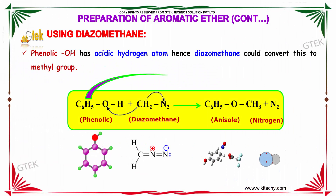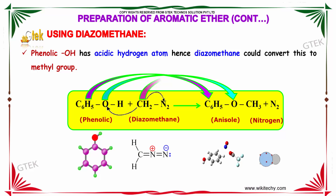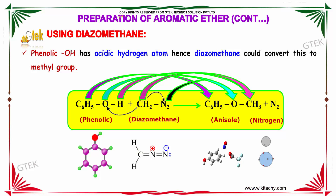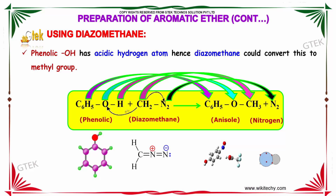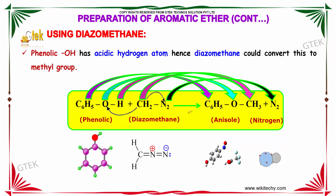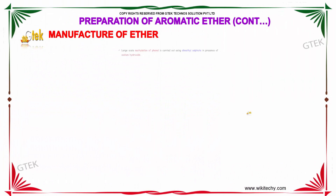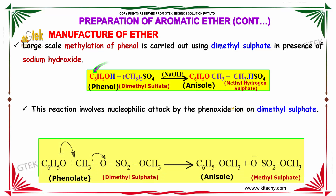The second method is preparation of aromatic ether using diazomethane. Phenol always has an acidic hydrogen atom, so diazomethane can convert this to a methyl group. That is, phenol C6H5OH reacts with CH2N2 to form anisole and nitrogen gas.